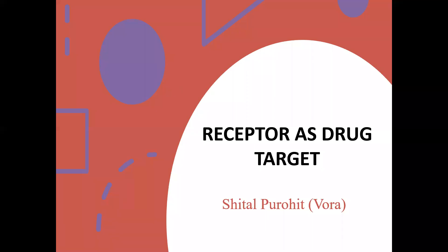Hello students, let's start with the second topic related to drug targets. As we have earlier seen enzymes and how they act as a drug target, now we will see receptors and how they are used as a drug target. The target is a biomolecule or macromolecule on which a drug acts to inhibit its reaction.